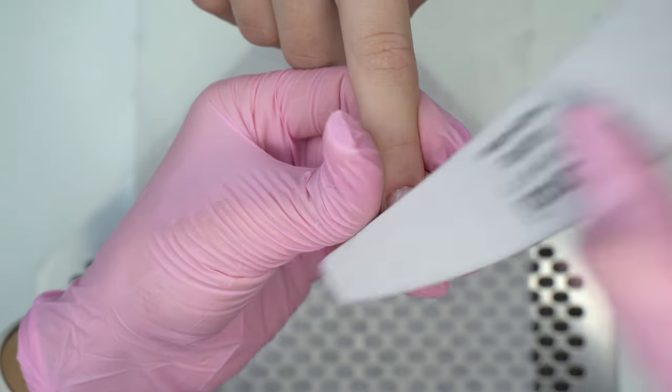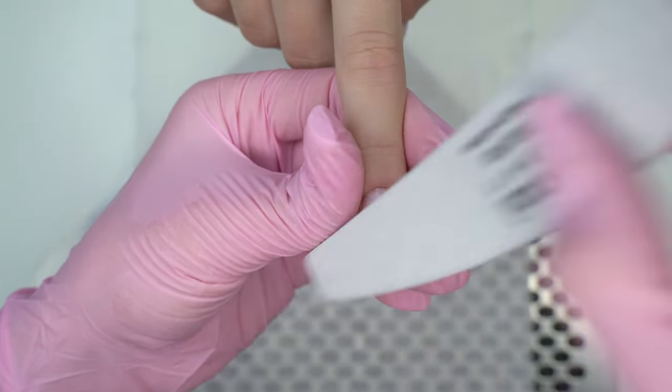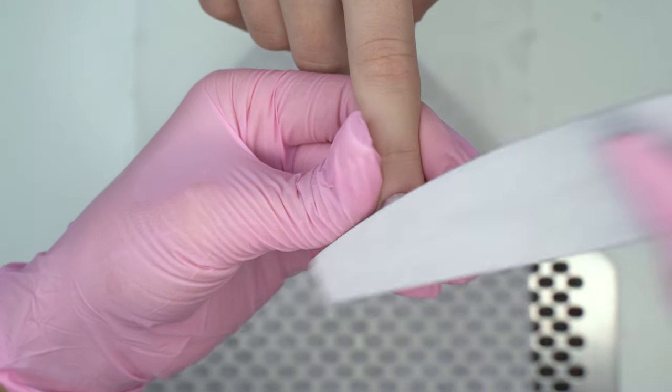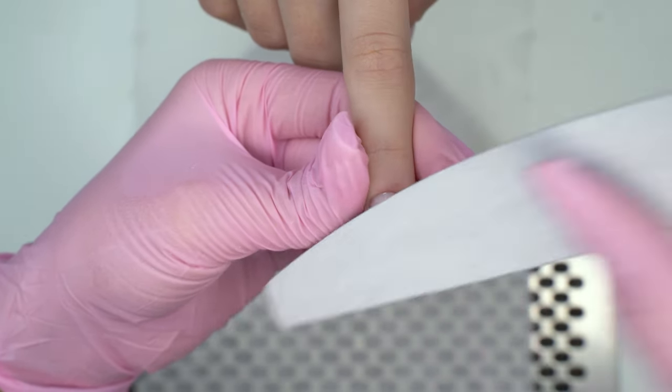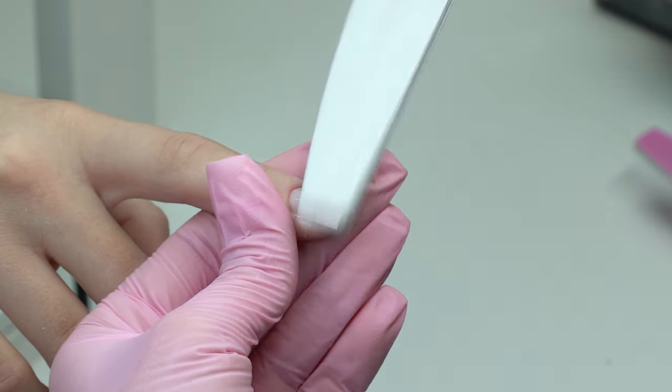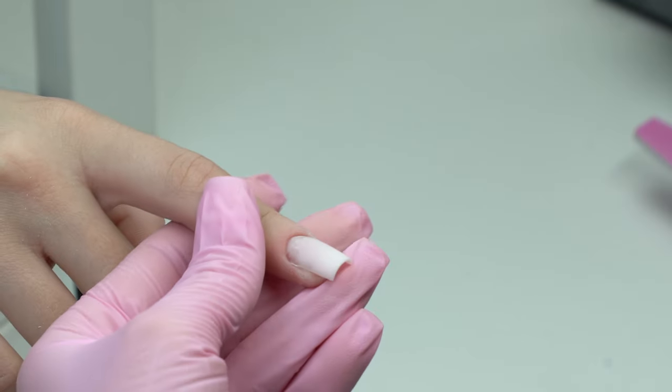I barely touch the cuticle zone since it's already perfect. I smooth the surface out with long moves. I love this beautiful and natural looking C-curve and thin nail tips. Don't worry, they're still going to last long.